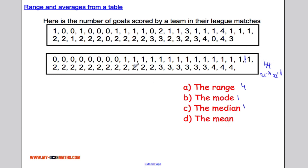A slightly quicker way to do the mean in this case would be to do 8 times by 0, because there's 8 lots of 0, 15 times by 1, because we've got 15 lots of 1, 12 times by 2, because we've got 12 lots of 2, 6 times by 3, and 3 times by 4.